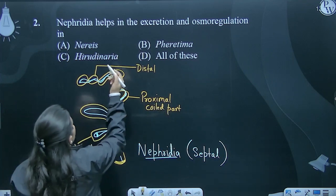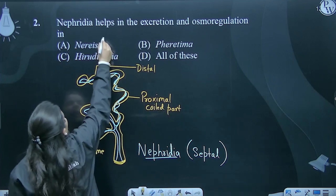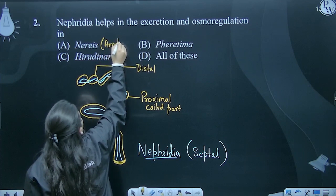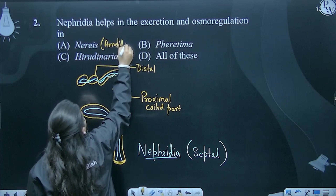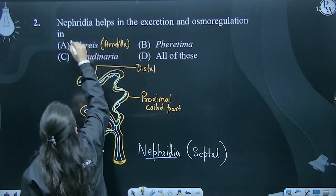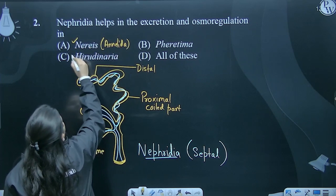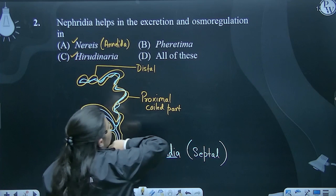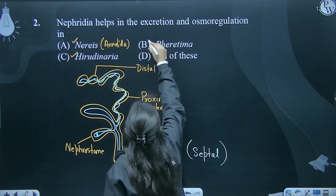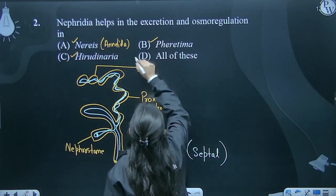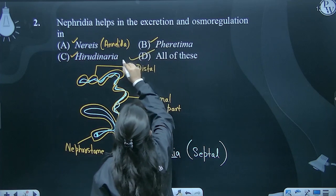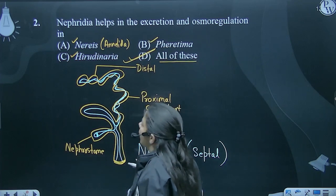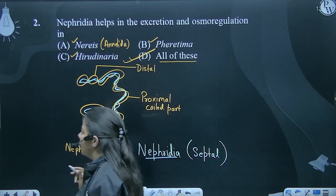So Nereis — Nereis is Annelida. It is present in Annelida. Hirudinaria is leech — it is also present in Hirudinaria. So all of these is the correct answer for question number two.